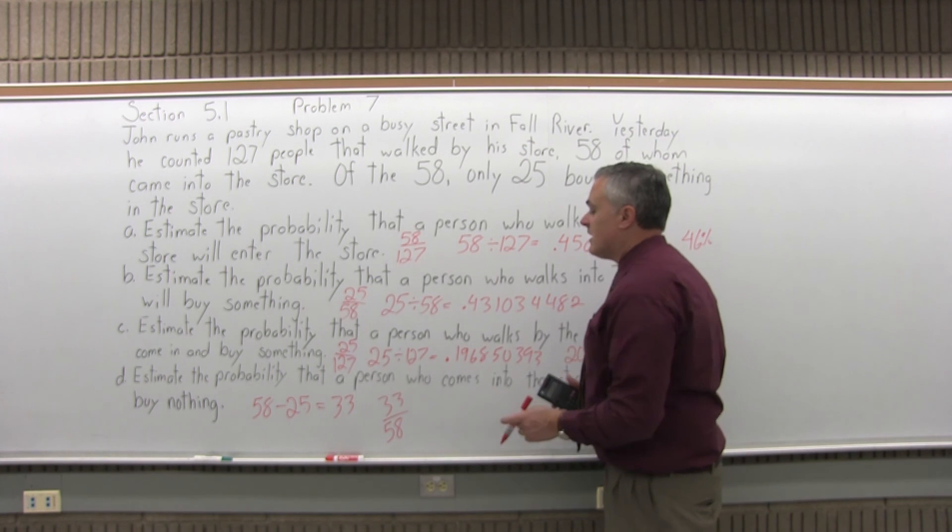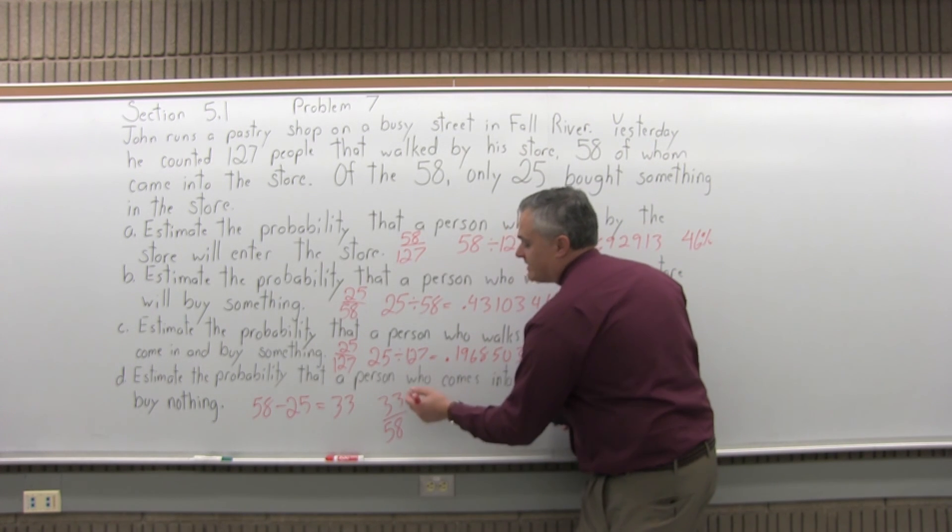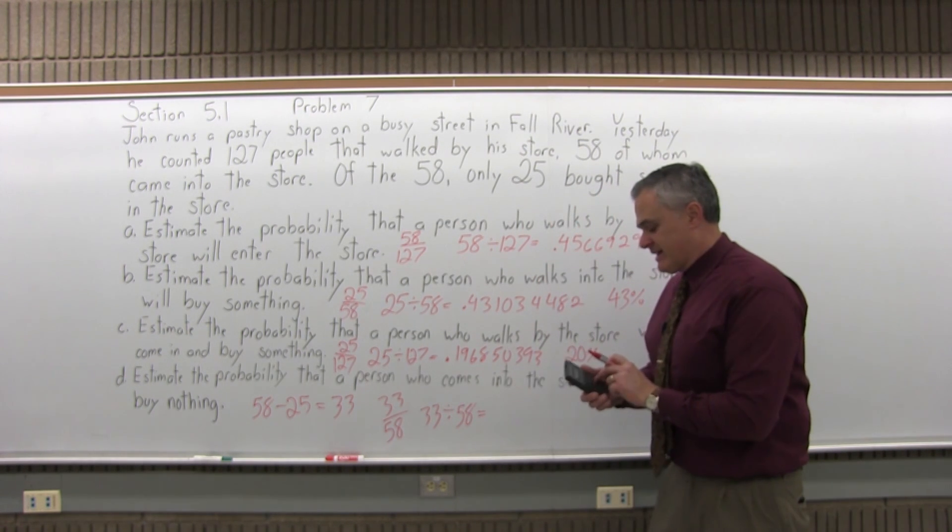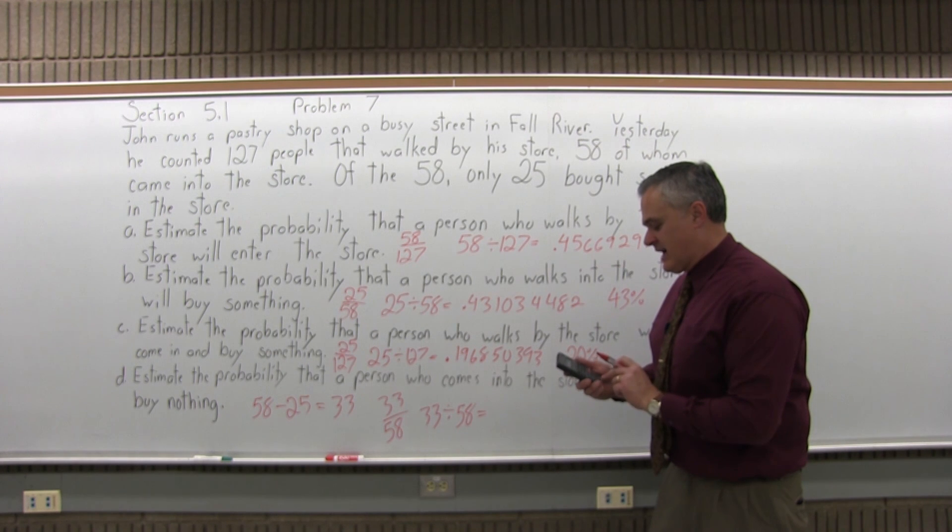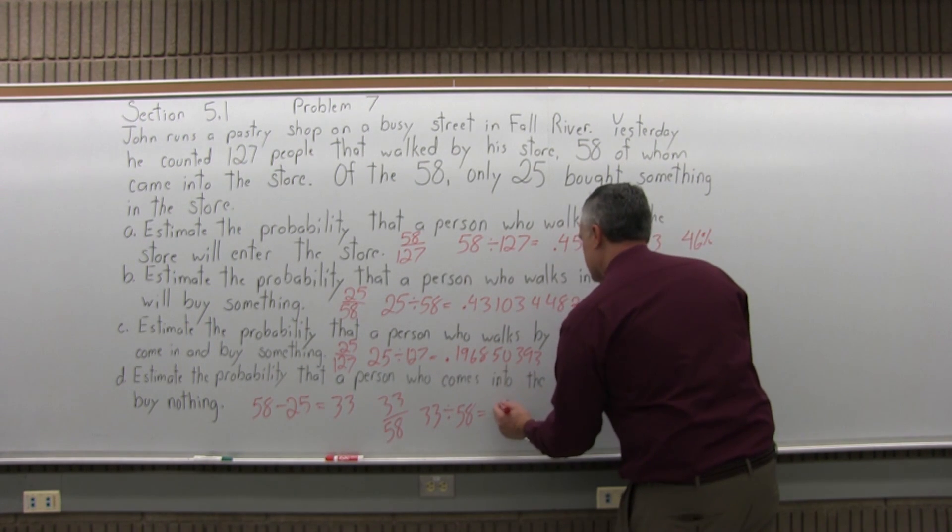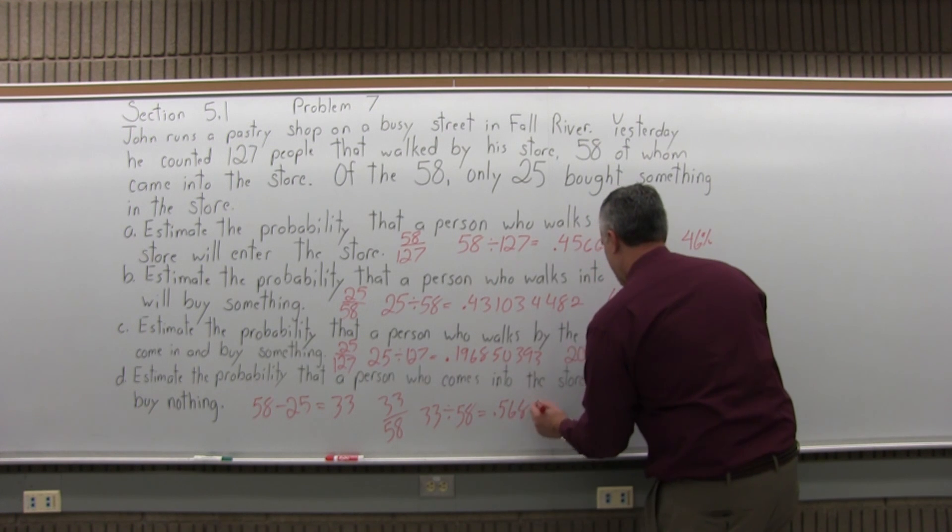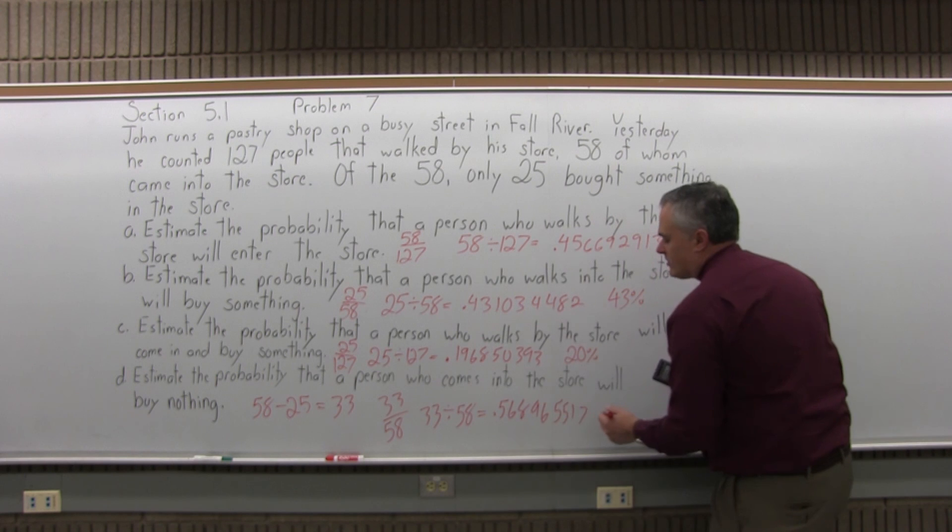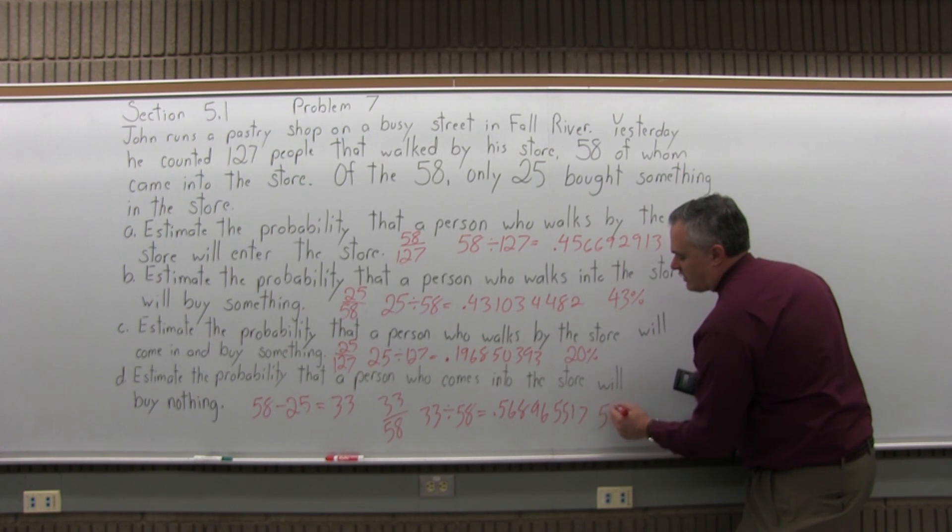33 divided by 58 equals 0.568965517, which you can round off or express as approximately 57%.